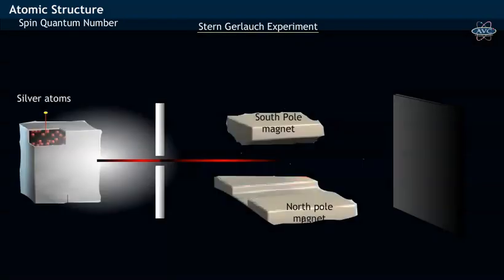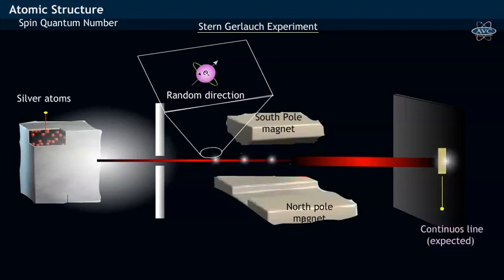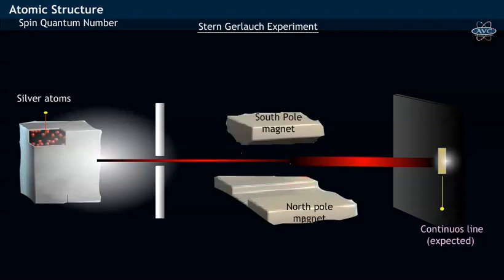Stern and Gerlach expected that the silver atom having magnetic moment in random direction gets deflected and appears as a continuous line on striking the photographic screen, which actually doesn't happen, which was in accordance to the classical theory.